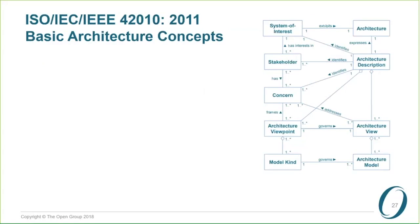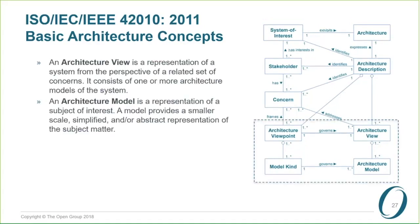So this is the picture. It's slightly different to the version that was in version 9.1, particularly down in the bottom right. I'm not going to look at the top right, because the definitions of system of interest, architecture, architecture description, stakeholder, and concern have not changed dramatically between the two versions of the ISO standard. The major areas of change are in the shaded area down on the bottom right, and the main thing is the introduction of the box labeled model kind. So we've also had viewpoints and views. Viewpoints capture concerns.